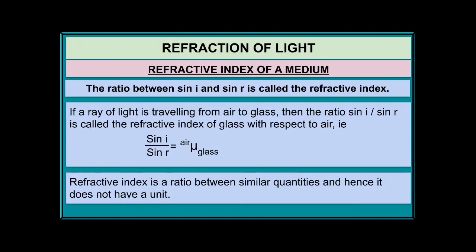The refractive index is the ratio between sine i and sine r. If a ray of light travels from air to glass, the ratio sine i / sine r is called the refractive index of glass with respect to air. The symbol used looks like a mu (μ), or we can use small n to represent refractive index. Remember, refractive index is a ratio between similar quantities and therefore has no unit.